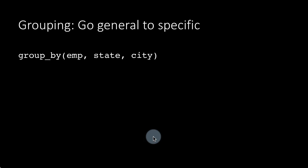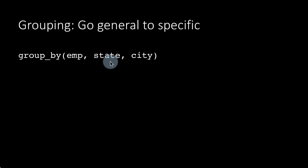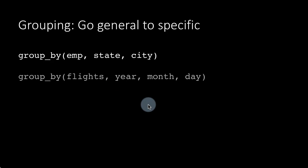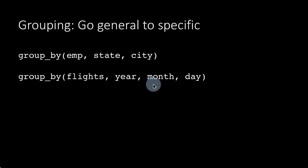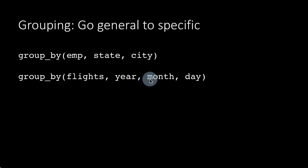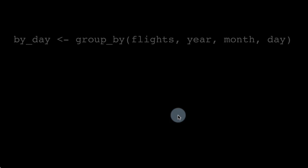In grouping, we always go from general to specific. City is more specific, state is more general. So when you group it, you say group_by(state, city). When you do one level of summarization, city goes away and it's still grouped by state. You do another level of summarization and state goes away with no more grouping. Or take the example of group_by(flights, year, month, day) — days make up months, months make up years. Grouping always has to go from general to specific: year is more general than month, month is more general than day. That's really important.